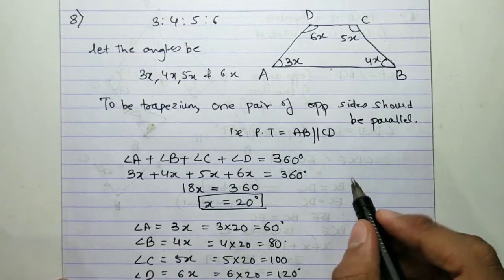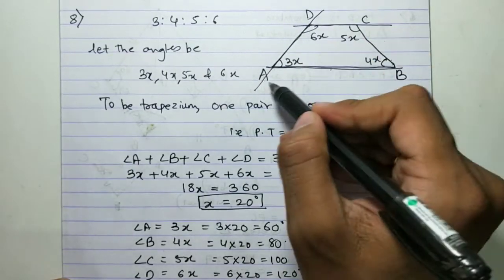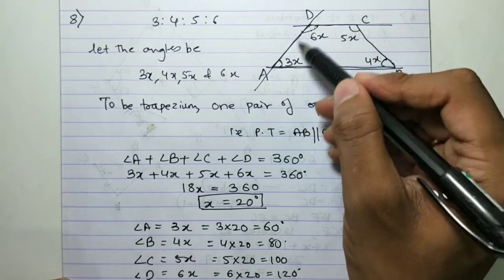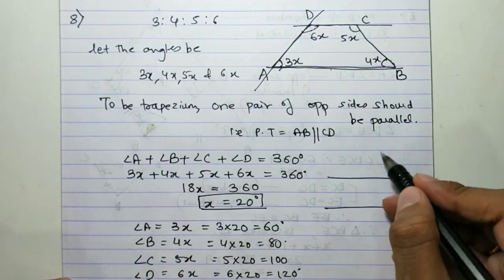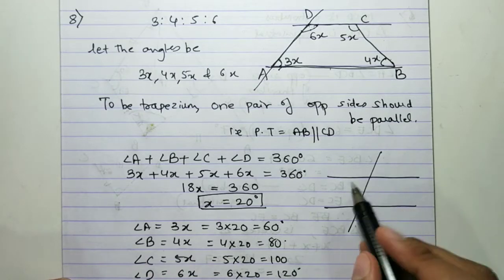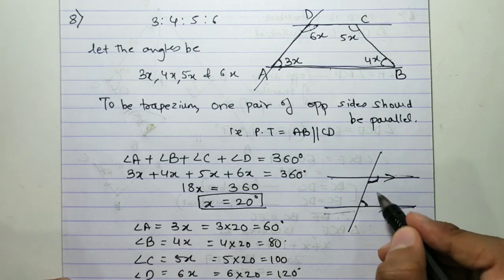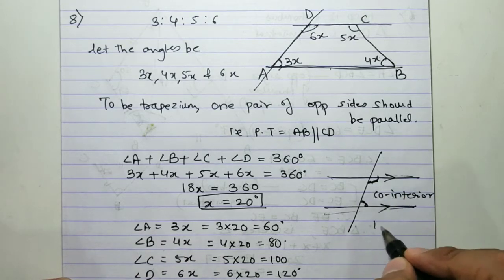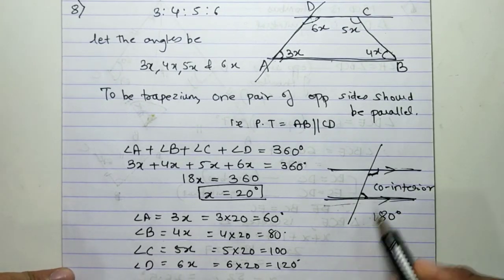Now if these two lines are parallel and there is a transversal cutting them, then these two angles — called co-interior angles — have the property that their sum is 180 degrees. If two lines are parallel, the sum of co-interior angles will be 180 degrees.